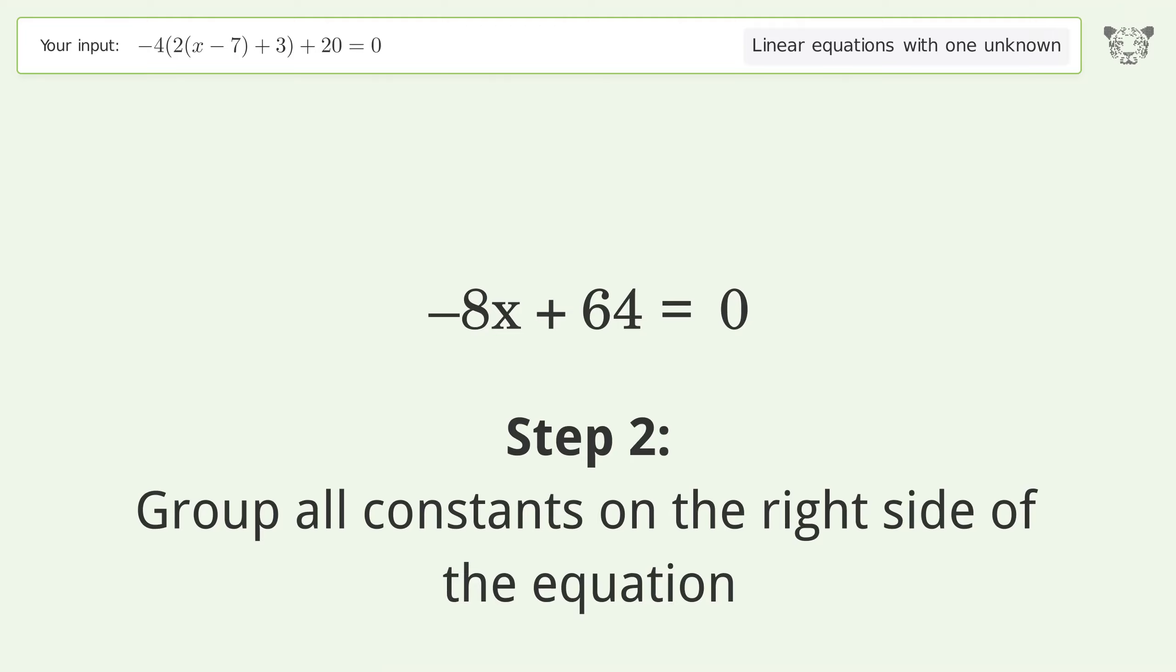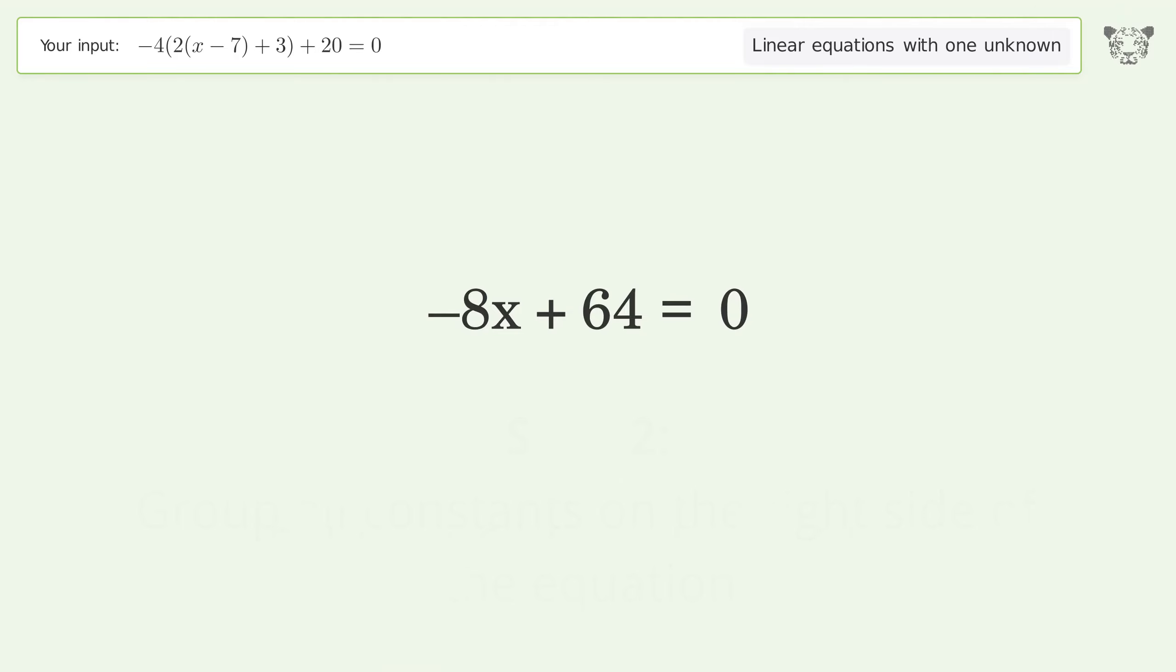Step 2: Group all constants on the right side of the equation. Subtract 64 from both sides. Simplify the arithmetic.